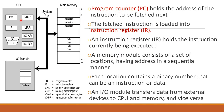The Program Counter (PC) holds the address of the next instruction to be fetched. The currently executing instruction is held in the Instruction Register (IR). So the Program Counter points to the next instruction, while the Instruction Register holds the instruction currently being executed.